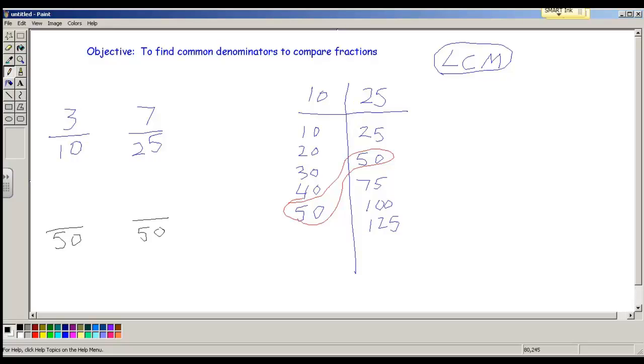Now you have to ask yourself the question, what did I do to this 10 to turn it into a 50? Because we're trying to make equivalent fractions here. The answer is, look over here, 10 times 1, 10 times 2, 10 times 3, 10 times 4, 10 times 5. So I multiplied it by 5, times 5. Whatever I did to the denominator, I need to do to the numerator. 3 times 5 is 15. So this fraction is 15 over 50.